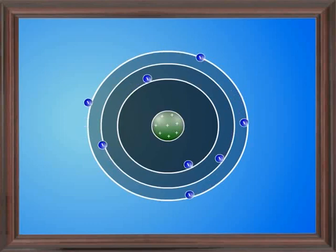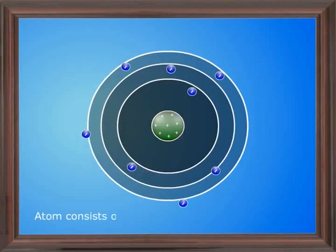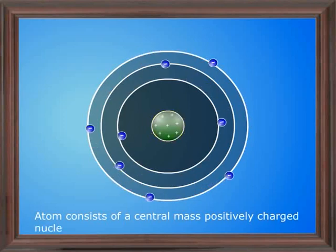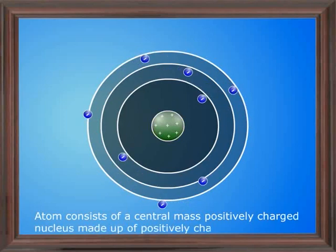From this experiment, Rutherford postulated the atomic model as follows. 1. Atom consists of a central mass positively charged nucleus made up of positively charged protons.